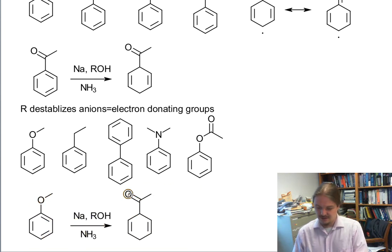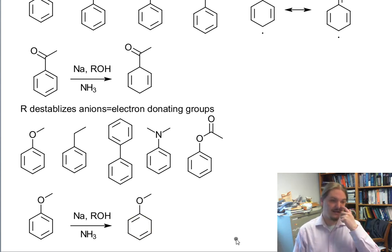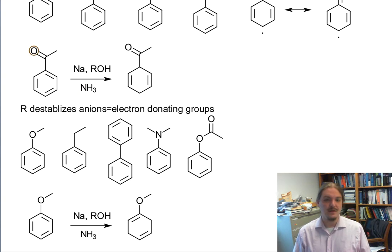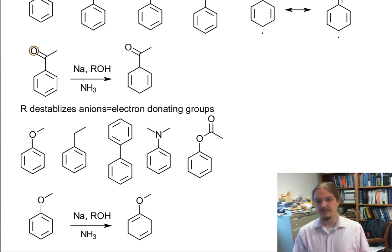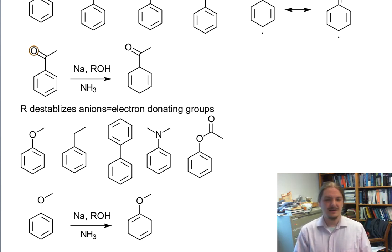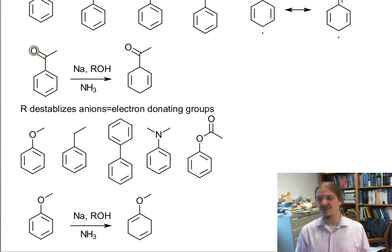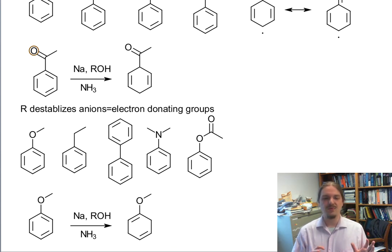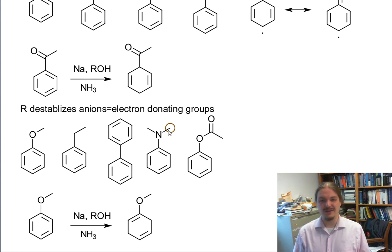And that's because these things are electron donating, so they're not going to want to have an anion next to something that's electron donating — electron donating groups destabilize anions. This concludes my video on the regiochemistry of the Birch reduction. There may be one more video in this series that uses molecular orbital theory to back up some of these claims, showing that complementarily, molecular orbital theory also shows that the LUMO orbitals of these compounds are preferentially oriented to undergo reduction in a certain place and not in other places.